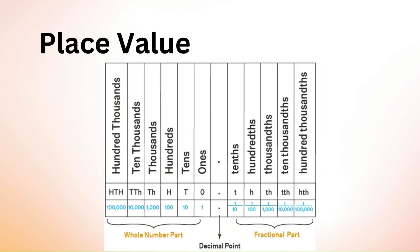A decimal number system is used to express whole numbers and fractions together using a decimal point. This decimal point lies between the whole number part and the fractional part. While the whole number part follows the usual place value chart of ones, tens, hundreds, and so on, there is a slight difference in the place value of the numbers to the right of the decimal point.